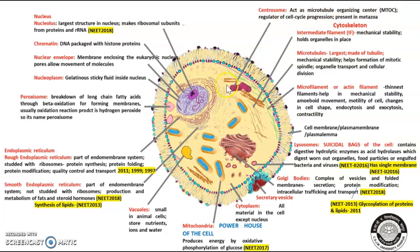The eukaryotic animal cell does not have a cell wall, which is present in the plant cell. It does not have plastids like chloroplast, chromoplast, and leucoplast, which are present in plant cells. The storage material of the eukaryotic animal cell is glycogen, while in the plant cell it is starch. These differences between plant and animal cells will be taken up in the next class.